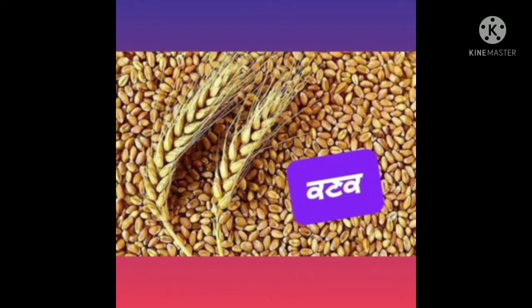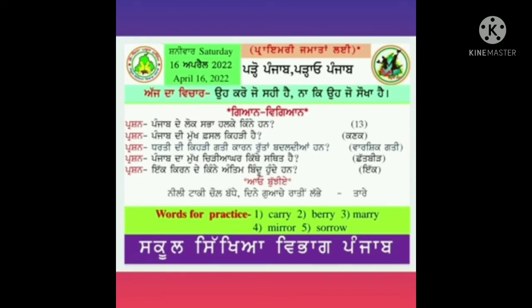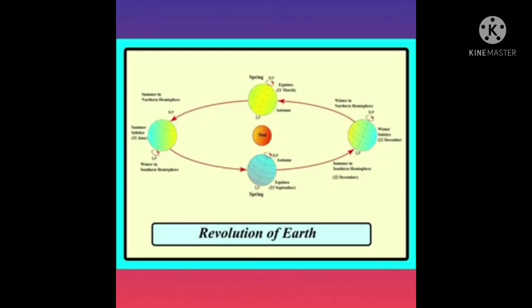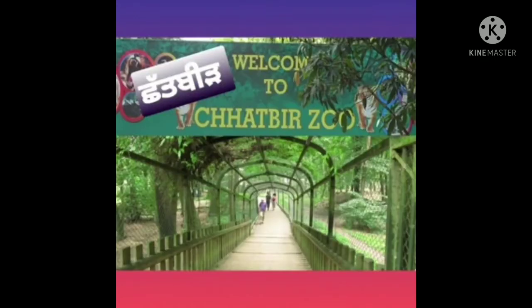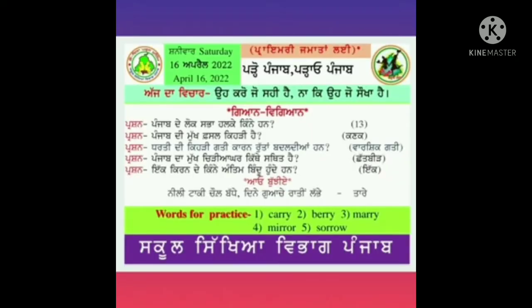ਕਣਕ ਹੈ। Third question: Which movement of earth causes the seasons to change? ਧਰਤੀ ਦੀ ਕਿਹੜੀ ਗਤੀ ਕਾਰਨ ਰੁੱਤਾਂ ਬਦਲਦੀਆਂ ਹਨ? ਵਾਰਸ਼ਿਕ ਗਤੀ ਕਾਰਨ ਧਰਤੀ ਦੀਆਂ ਰੁੱਤਾਂ ਬਦਲਦੀਆਂ ਹਨ। Fourth question: Where is the main zoo of Punjab situated? Punjab ਦਾ ਮੁੱਖ ਚਿੜੀਆਘਰ ਕਿੱਥੇ ਸਥਿਤ ਹੈ? Its answer is Chhatbir.